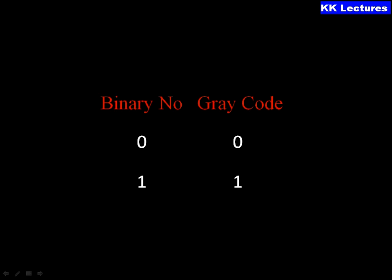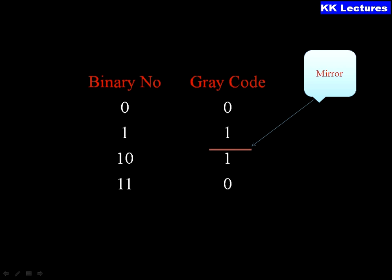There is also an option of constructing Gray code using an XOR gate, but that is a different approach. For small numbers, we can use the mirror image process. For binary zero, the Gray code is zero, and for binary one, the Gray code is one.